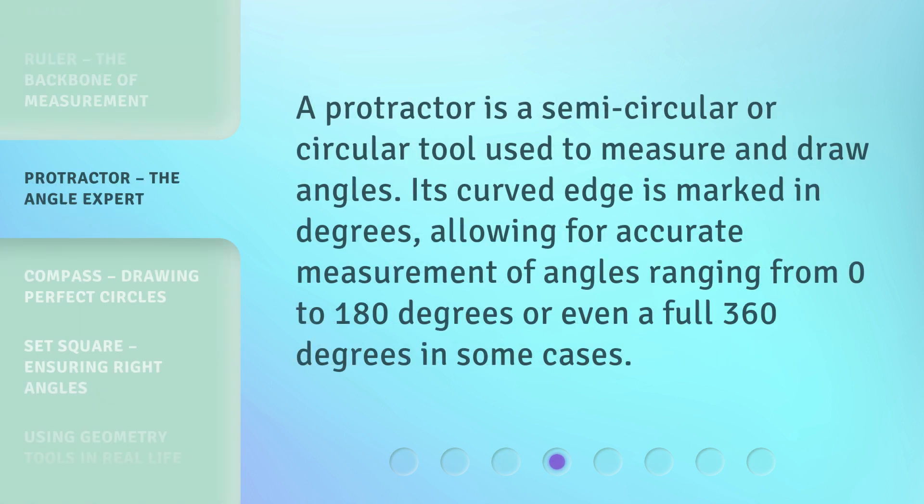A protractor is a semi-circular or circular tool used to measure and draw angles. Its curved edge is marked in degrees, allowing for accurate measurement of angles ranging from 0 to 180 degrees, or even a full 360 degrees in some cases.